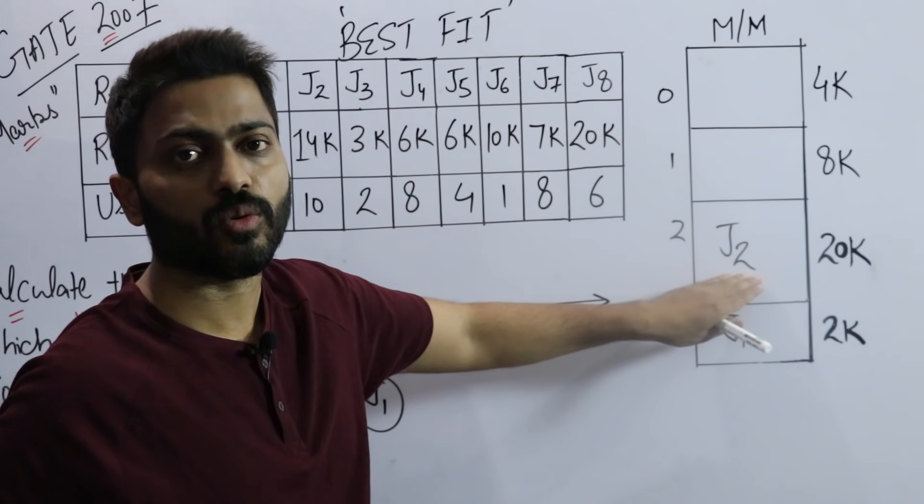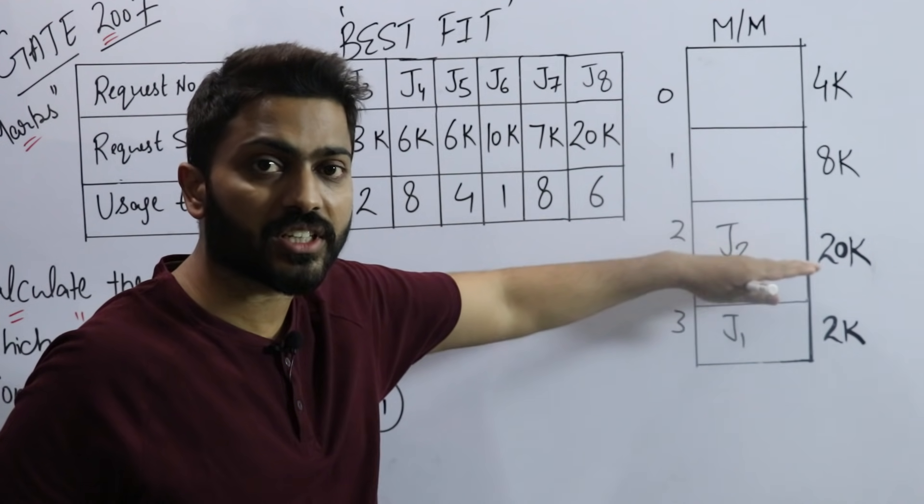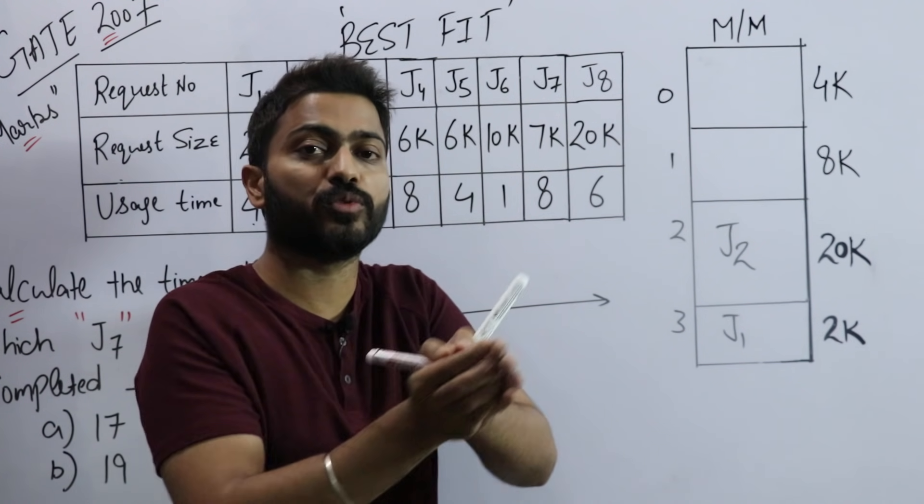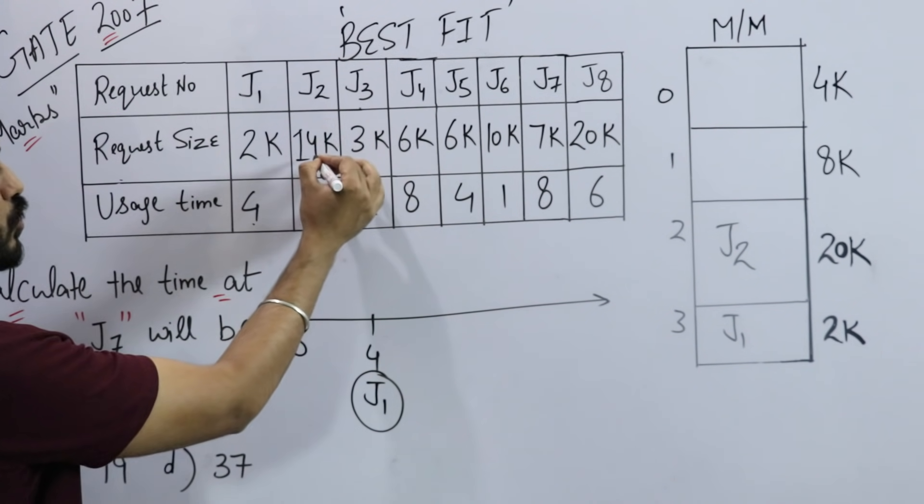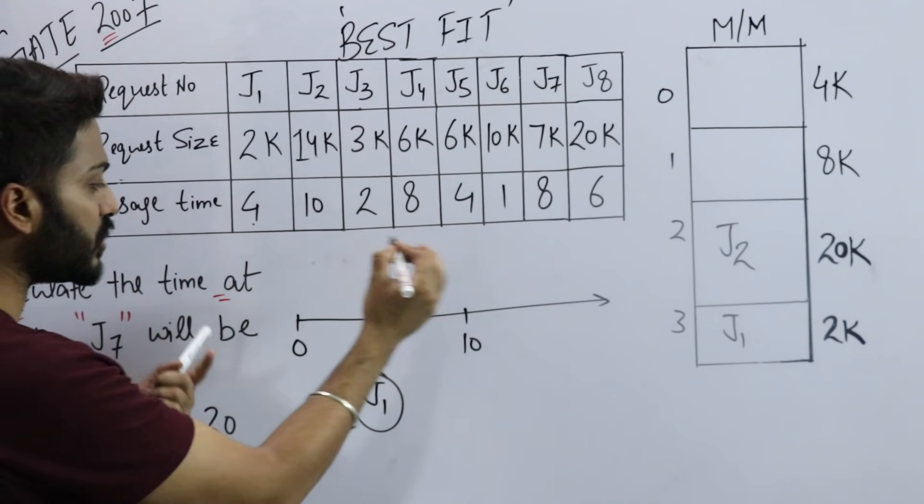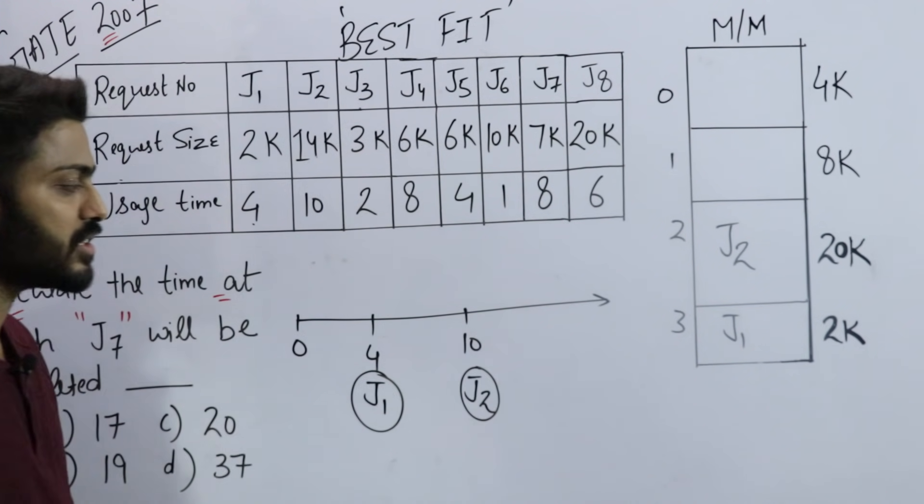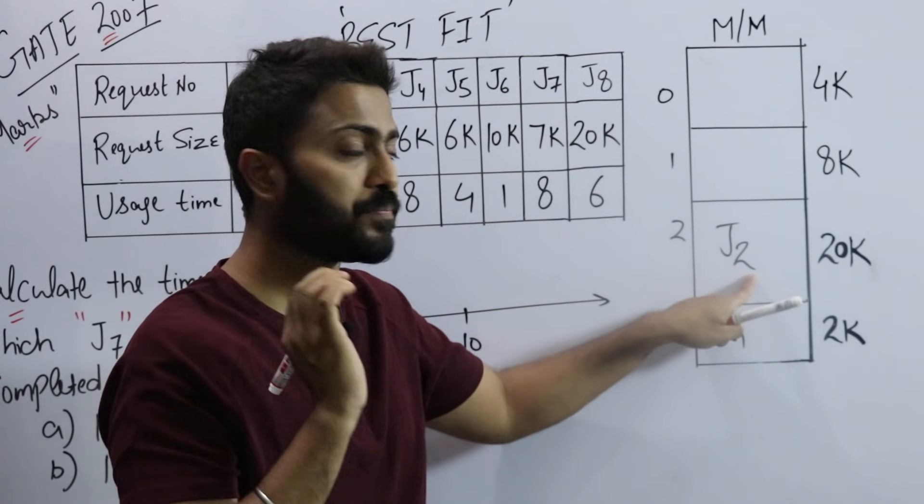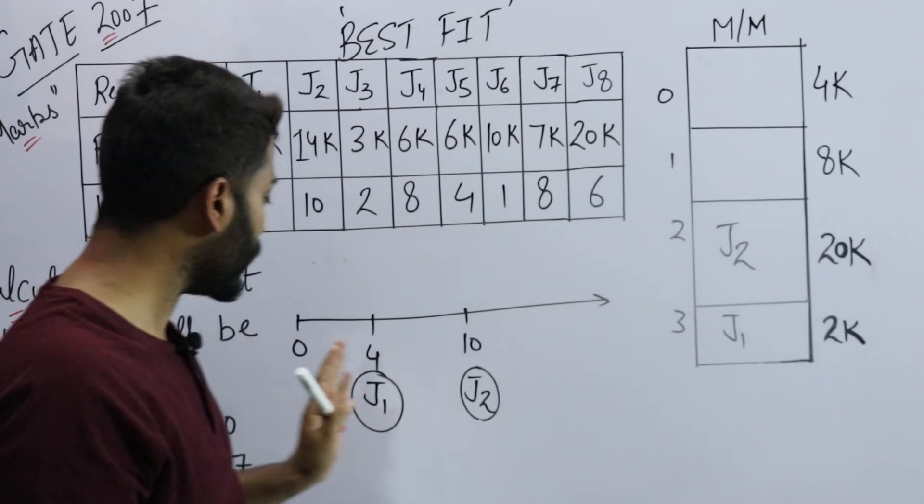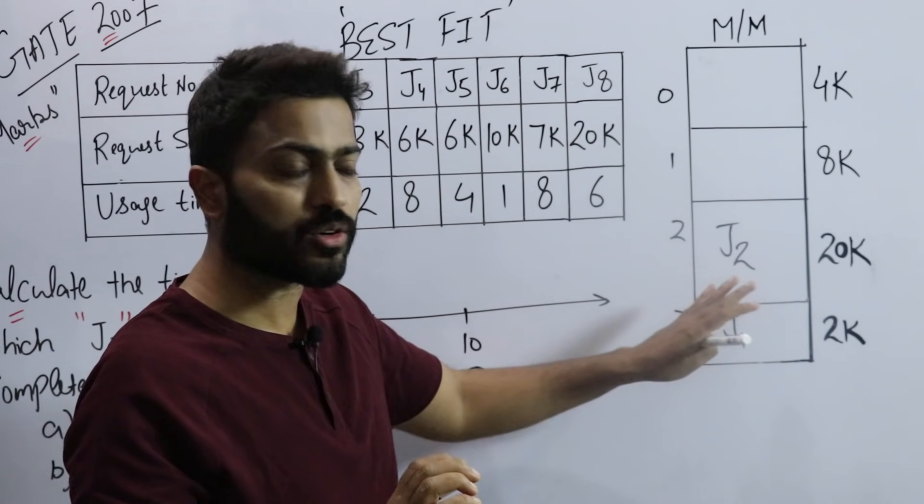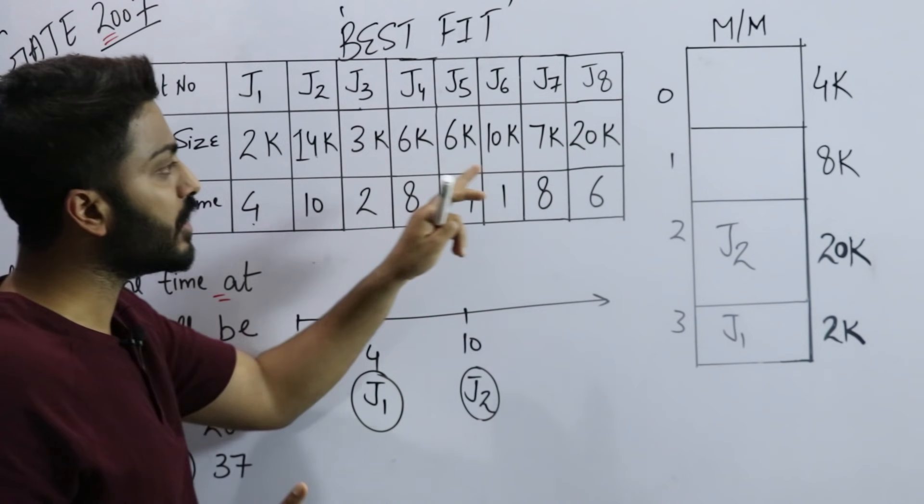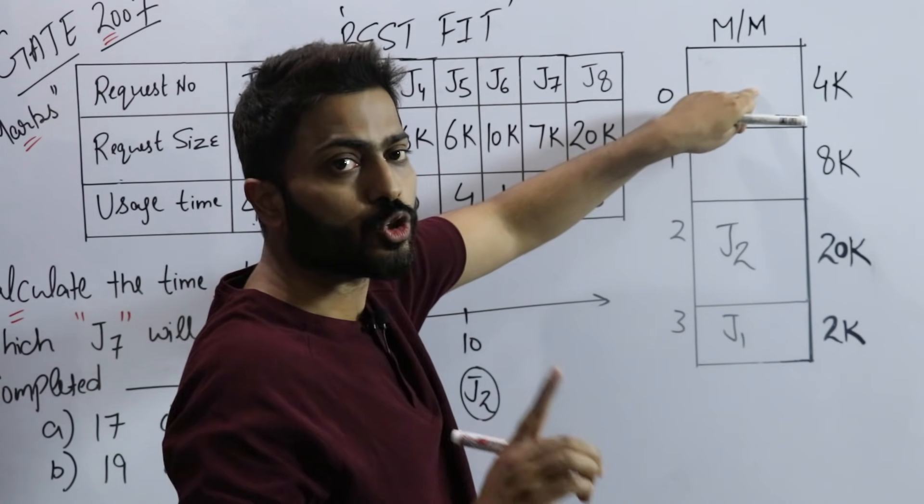I can fit J2 here. I place J2 here. Although the slot is 20k, some space of 6k will remain below. It's not about internal fragmentation - we're simply placing jobs and checking their sequence. If I place J2 here, how long will it stay? Until time 10. So J2 will complete at time 10. Next is J3. What is the size of J3? 3k.